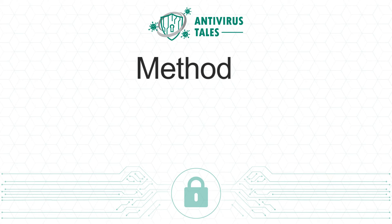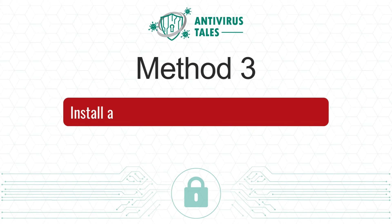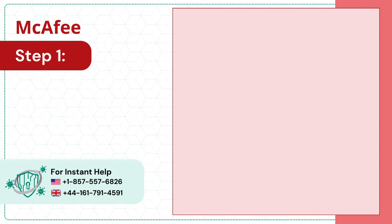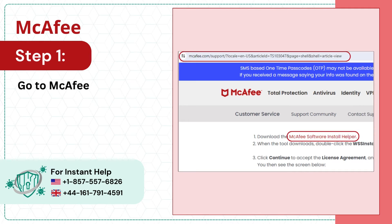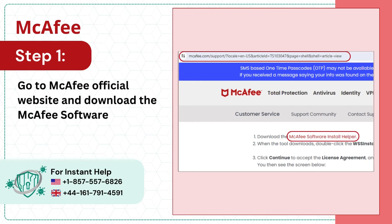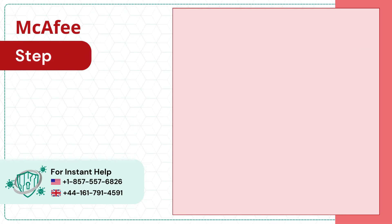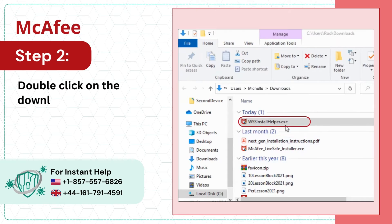Method 3: Install and run McAfee Software Install Helper. Step 1: Go to the McAfee official website and download the McAfee Software Install Helper. Step 2: Double click on the downloaded file.